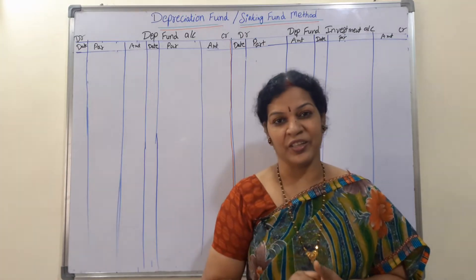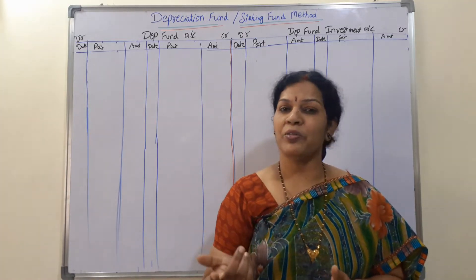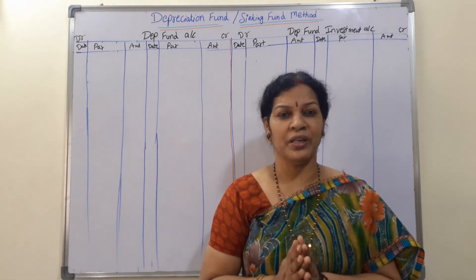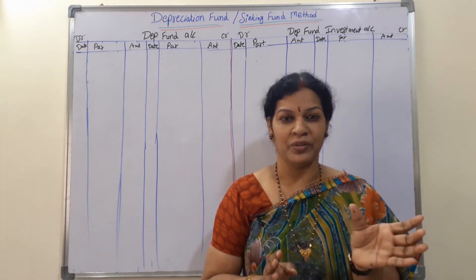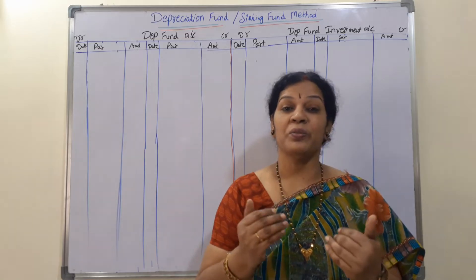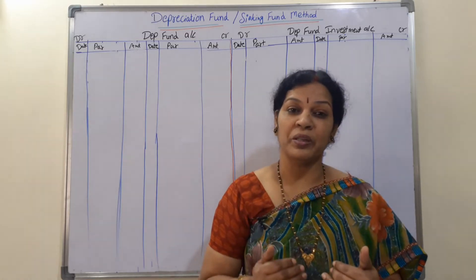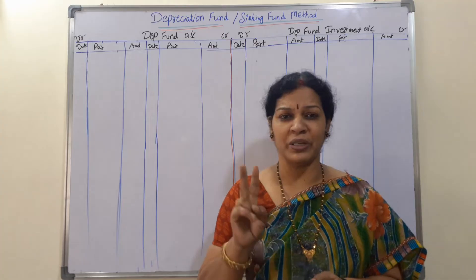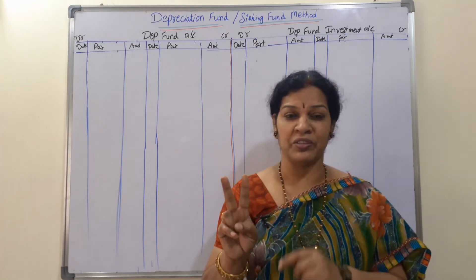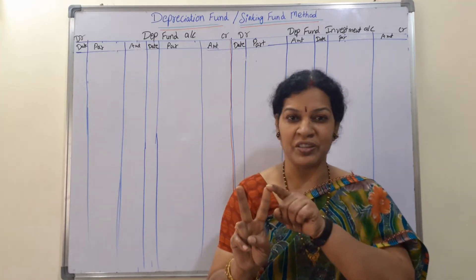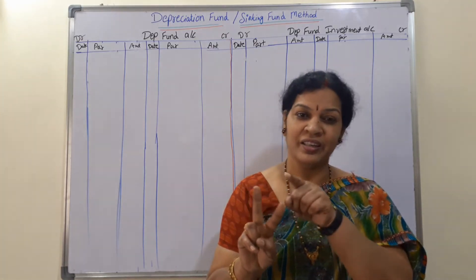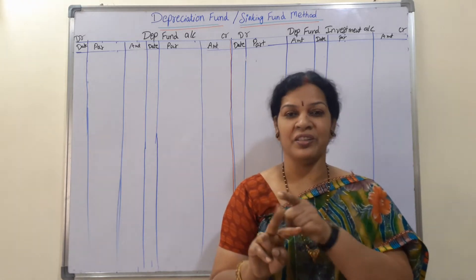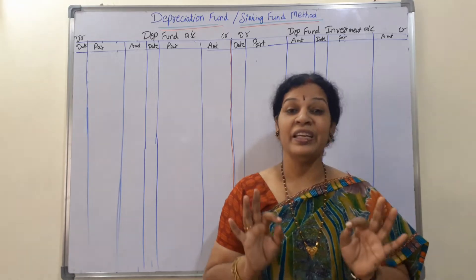That interest calculation you need to be careful about. Also, for providing depreciation, as per the table value you have to calculate, or sometimes in the problem it will be given directly - same like annuity method. In annuity method also we got two types of depreciation calculation: one is depreciation given directly, another one is as per the table value we have to calculate.